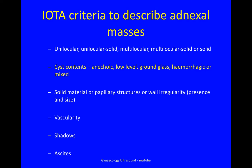These are the various criteria used to describe adnexal masses. We're going to be talking about cyst contents, whether they're anechoic, low-level, ground-glass, hemorrhagic or mixed.